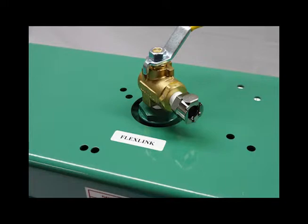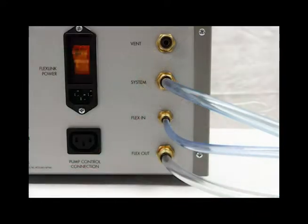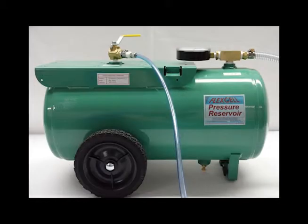Using the supplied quick disconnect, connect one end of the blue 3 1/8 inch or 9.5 mm tubing to the flex link port on the pressure reservoir and the other end to the system port on the back of the flex link box. The pressure reservoir is now connected to the flex link.